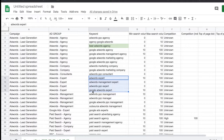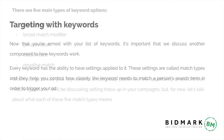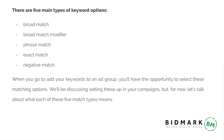Within this campaign we're going to have these ad groups, and within each ad group are the keywords. The next steps involve setting what are called match types for the keywords. Now that you're armed with a list of keywords, it's important to discuss another component of how keywords work. Every keyword has settings called match types, and they help you control how closely the keyword needs to match a person's search term in order to trigger your ad. Within AdWords there are five main types of keyword options: broad match, broad match modifier, phrase match, exact match, and negative match.